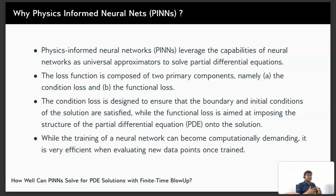The condition loss is designed to ensure that the boundary and initial conditions of the solution are satisfied, while the functional loss is aimed at imposing the structure of the PDE onto the solution. While the training of a neural network can become computationally demanding, it is very efficient when evaluating new data points once trained.